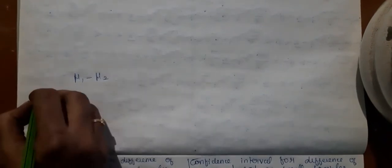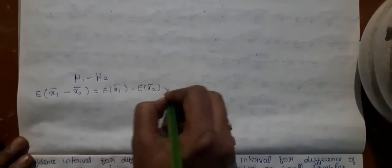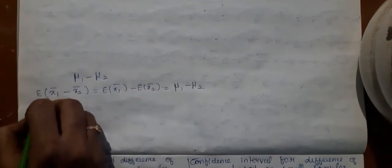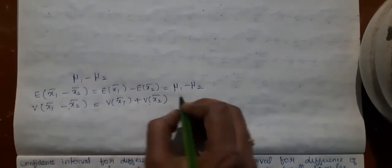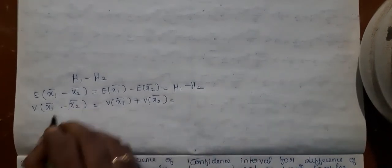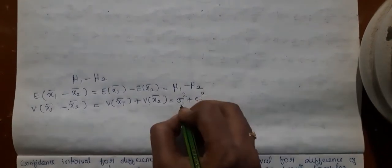What may be the appropriate statistic? Consider the expectation of x̄₁ minus x̄₂. You get expectation of x̄₁ minus expectation of x̄₂, which is mu1 minus mu2. The variance of x̄₁ minus x̄₂, when the samples are independent, is variance of x̄₁ plus variance of x̄₂. The covariance term is absent because the samples are independent. So you have sigma1²/n1 plus sigma2²/n2.